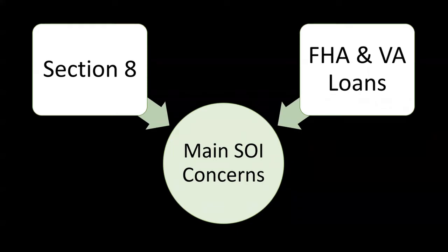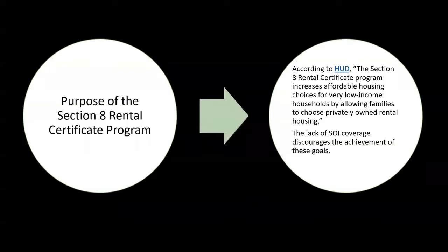There are two main source of income concerns: one is Section 8, and the other is lending with FHA and VA loans. The purpose of the Section 8 program, from HUD's website, is to increase affordable housing choices for very low-income households by allowing families to choose privately-owned rental housing. The lack of source of income coverage discourages and thwarts the achievement of these goals.